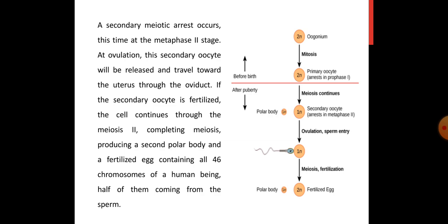At ovulation, this secondary oocyte will be released and travel towards the uterus through the oviduct. The secondary oocyte is released from the ovary and reaches the uterus through the oviduct. If the secondary oocyte is fertilized there, the cell continues the second meiotic division, completing meiosis and producing a second polar body. If fertilization occurs, the meiotic division completes and sperm and egg together form the fertilized egg, while the polar body disintegrates.